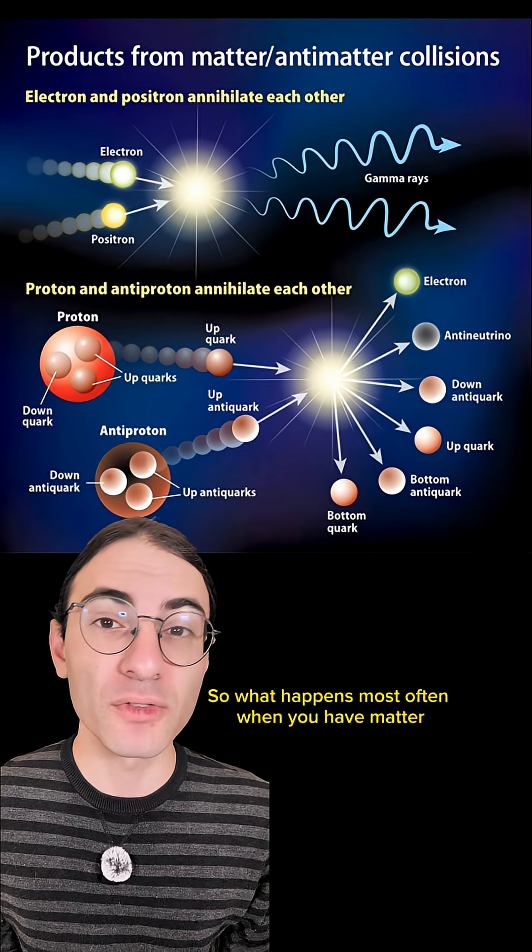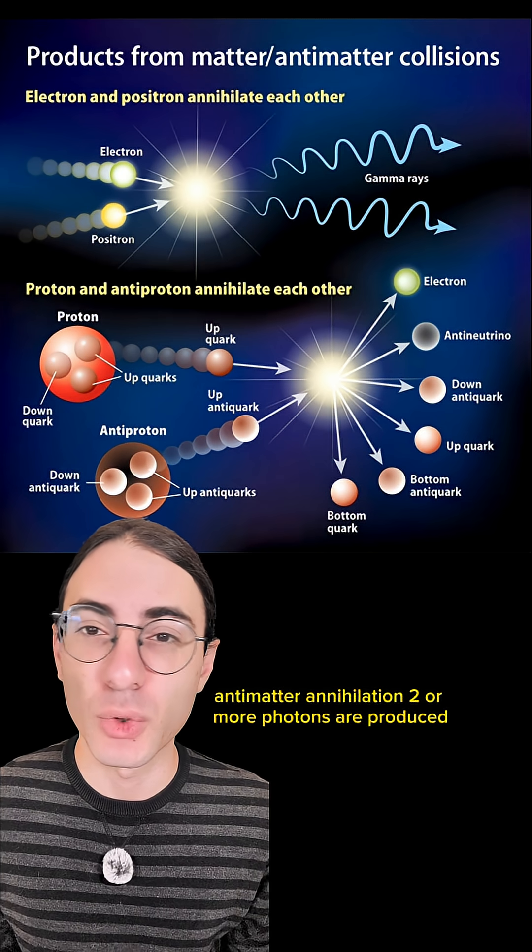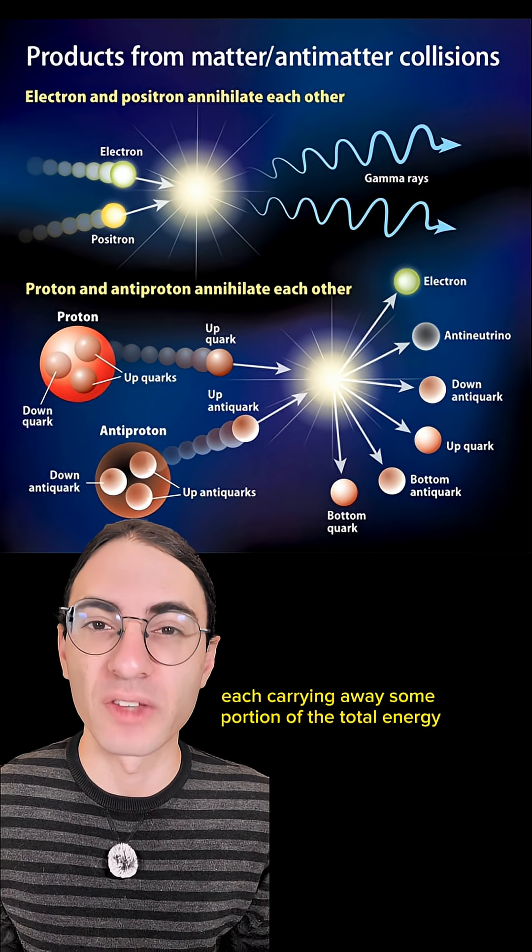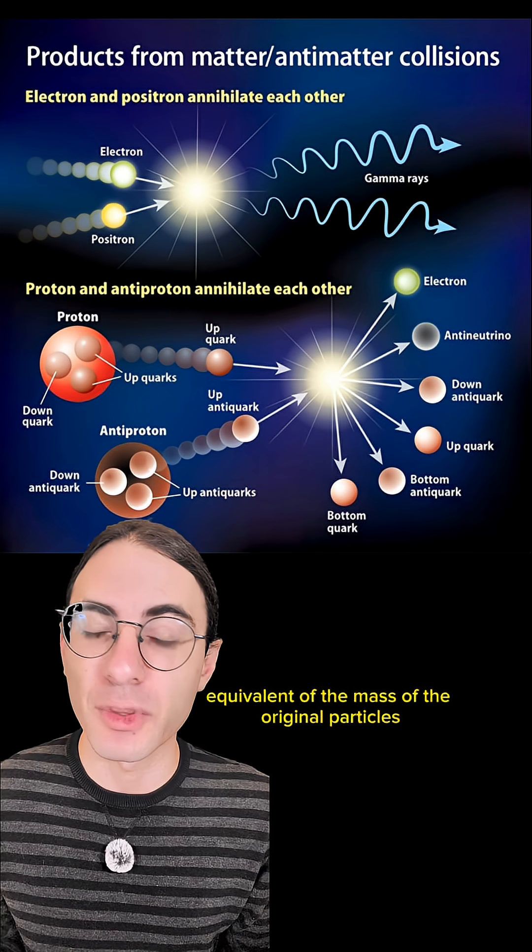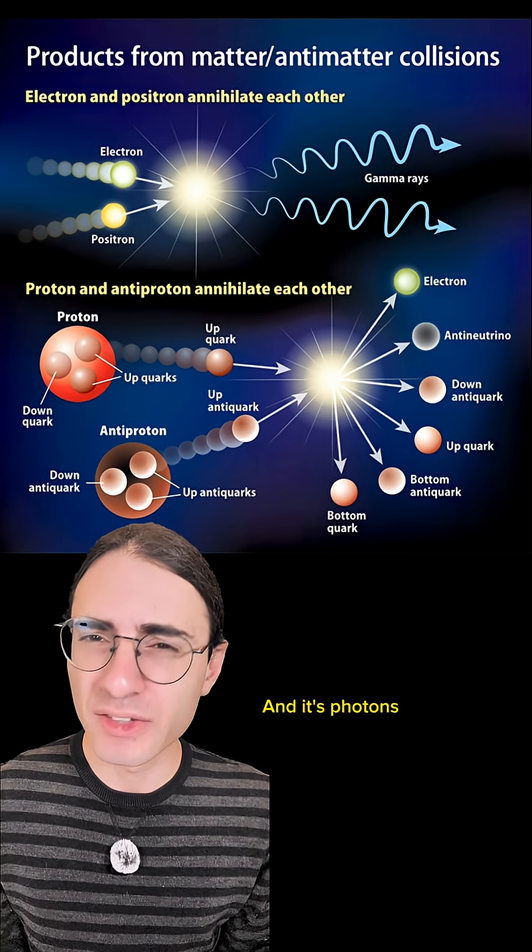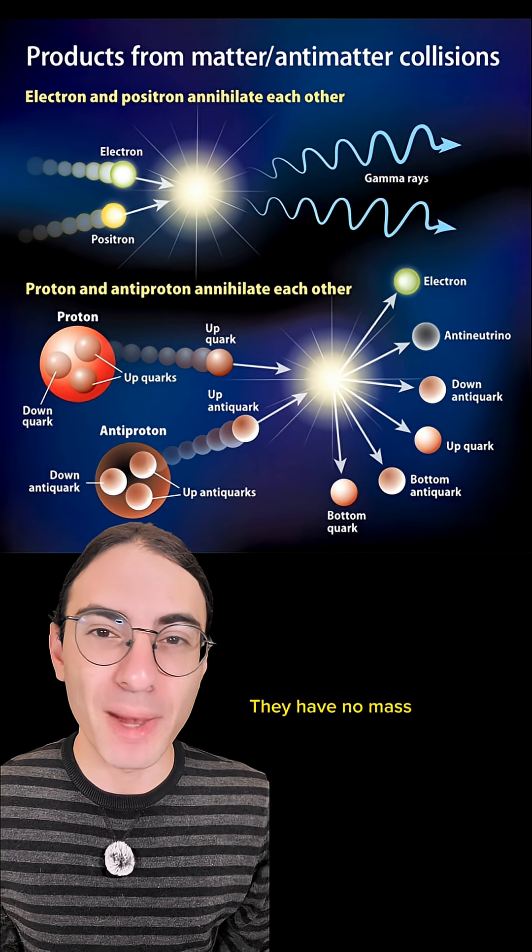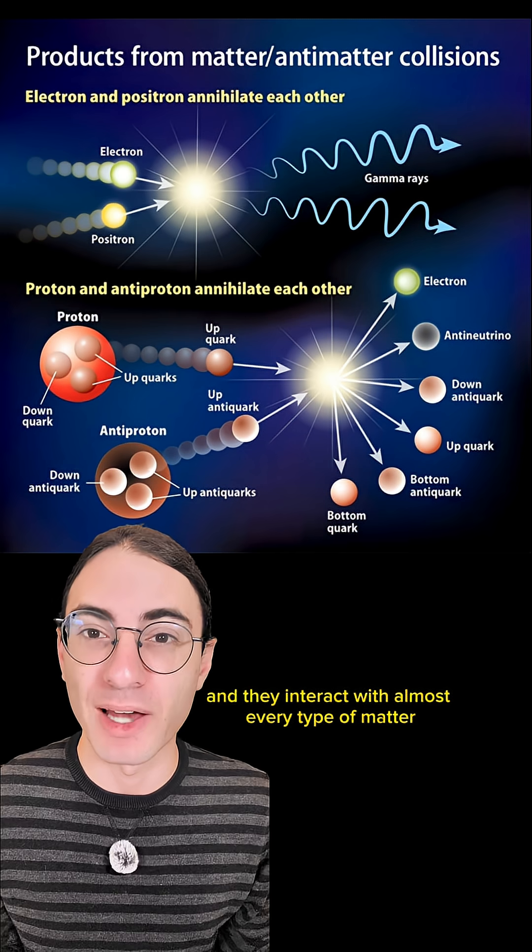So what happens? Most often when you have matter-antimatter annihilation, two or more photons are produced, each carrying away some portion of the total energy equivalent of the mass of the original particles. It's photons because they're the easiest particles to make. They have no mass and interact with almost every type of matter.